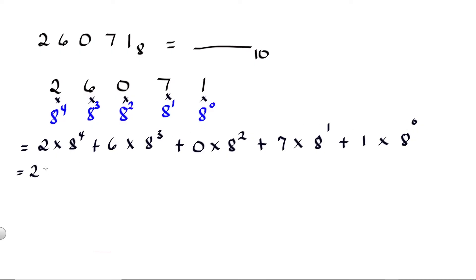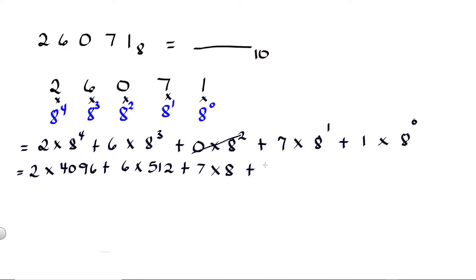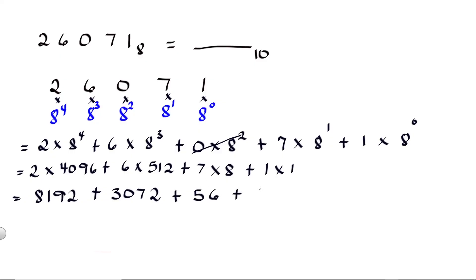Then: 2 times 8 raised to 4 is equal to 4096, plus 6 times 8 raised to 3 is equal to 512. Since this is 0, any number multiplied by 0 is equal to 0, so we can cancel that term. Then 7 times 8 raised to 1 is equal to 8, plus 1 times 8 raised to 0 is equal to 1 — any number raised to 0 is equal to 1. So 2 times 4096 is equal to 8192, plus 6 times 512 is equal to 3072, plus 7 times 8 is equal to 56, plus 1 times 1 is equal to 1.